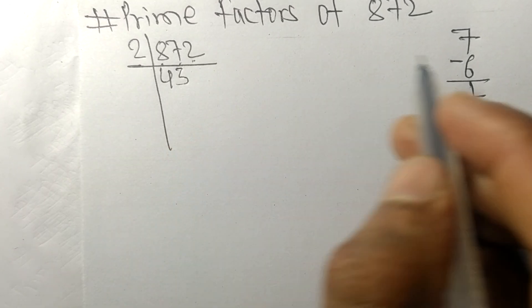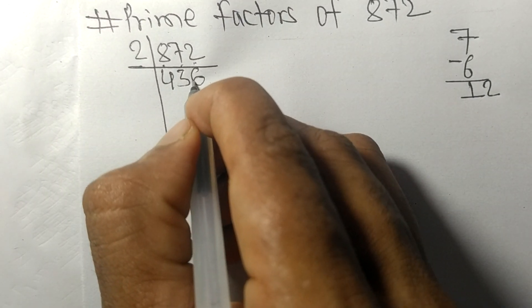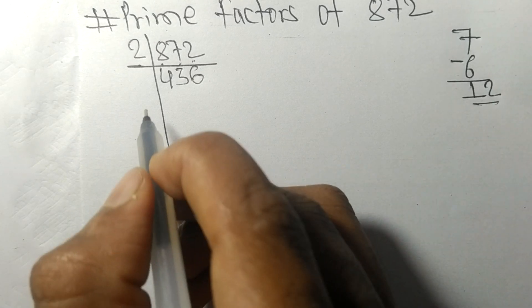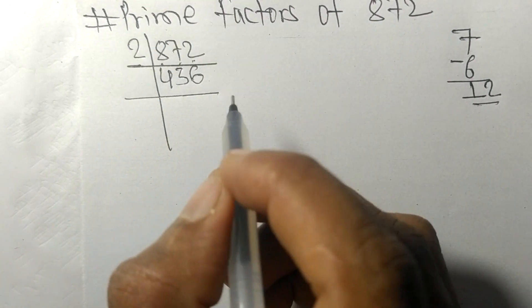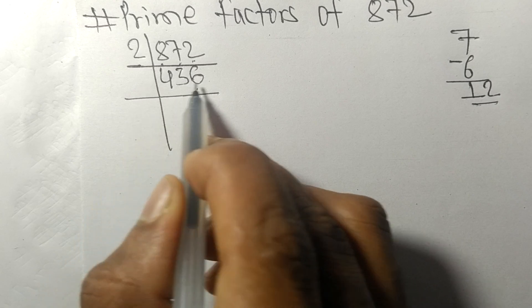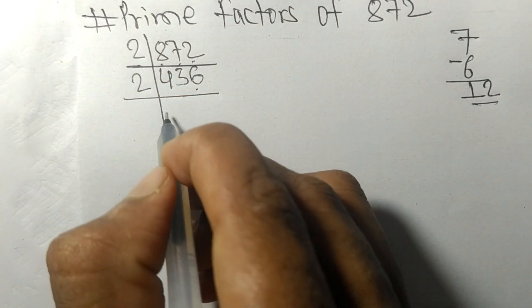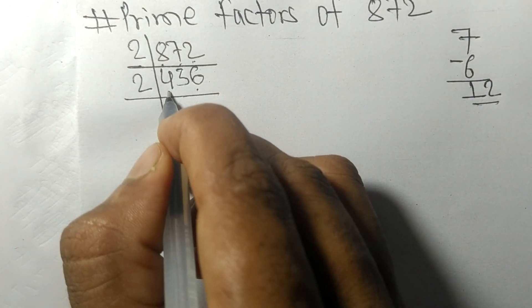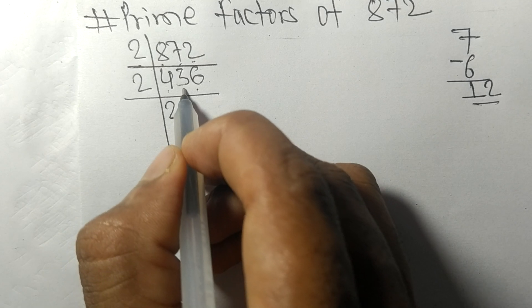And this 2 becomes 12. 2 times 6 is 12. Again it has an even number 6 at last, so it is divisible by 2. 2 times 2 is 4, so now we have 3.